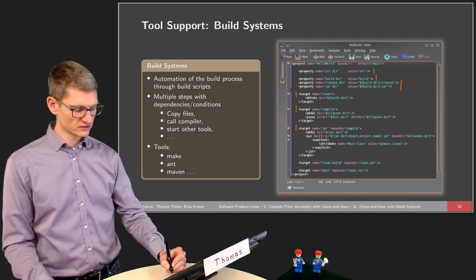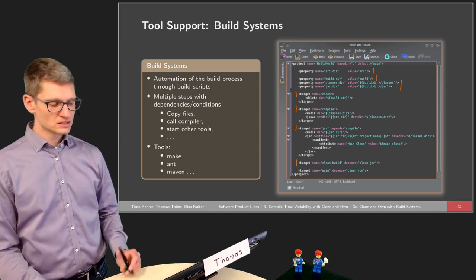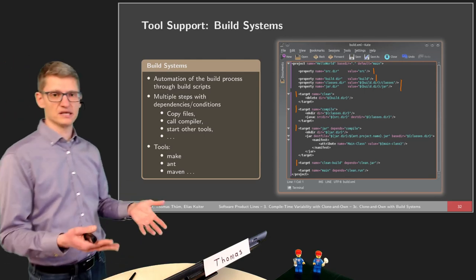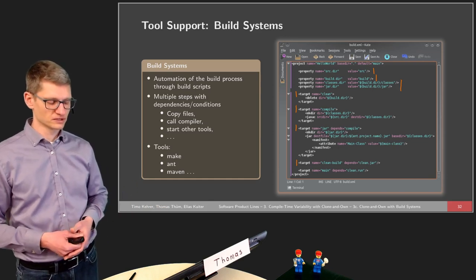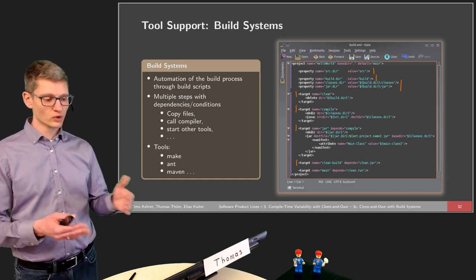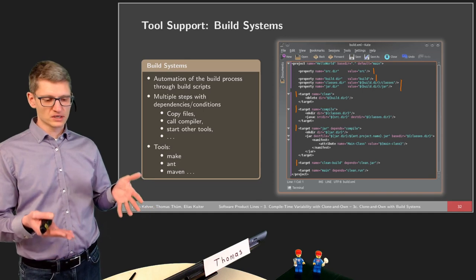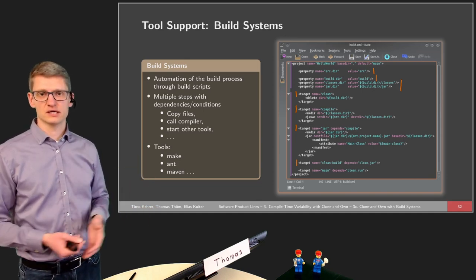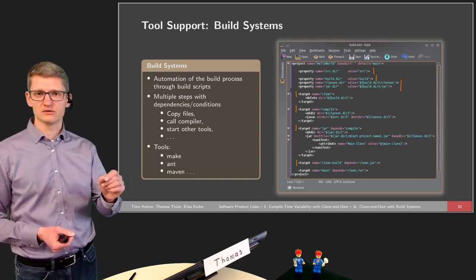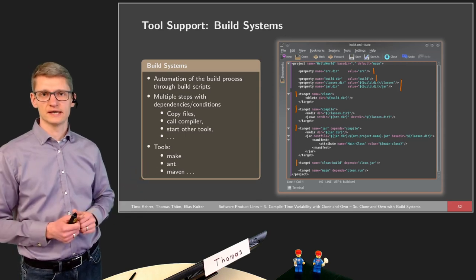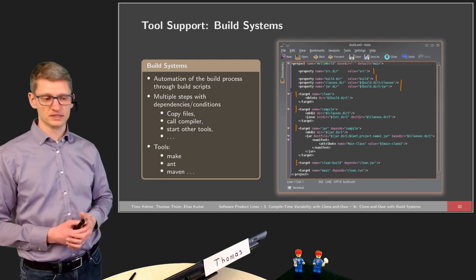Different build systems have different formats and languages to describe the necessary steps and the different ways to build the system. For large-scale software systems like an operating system, if you've applied a very small change, you do not want to recompile the whole thing, but rather have something like an incremental build. This is also supported by many build systems.